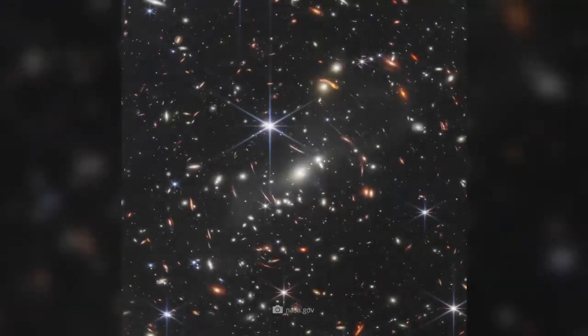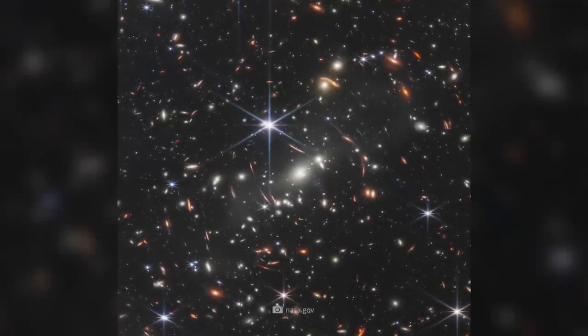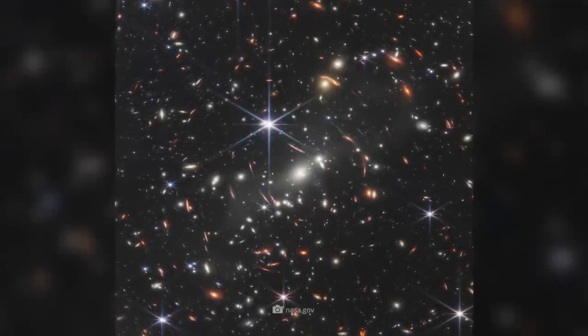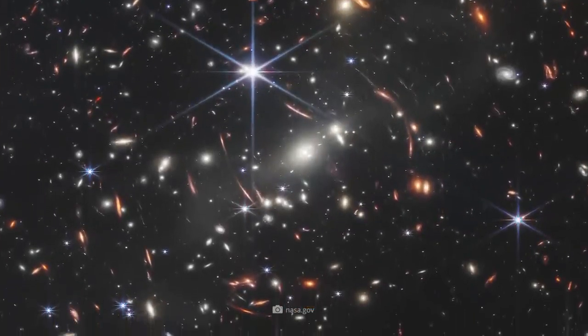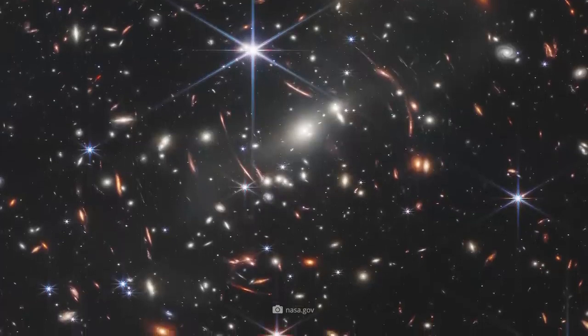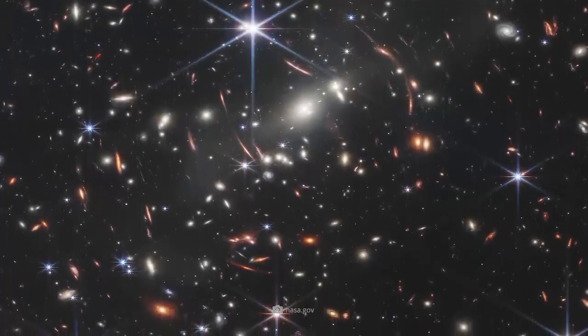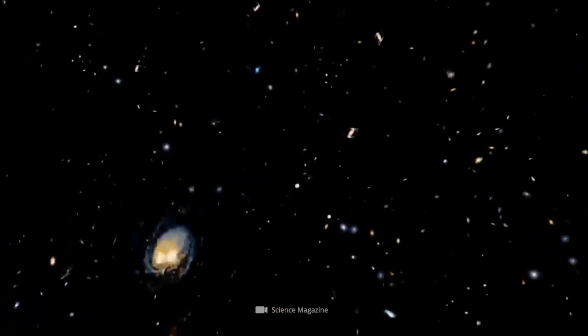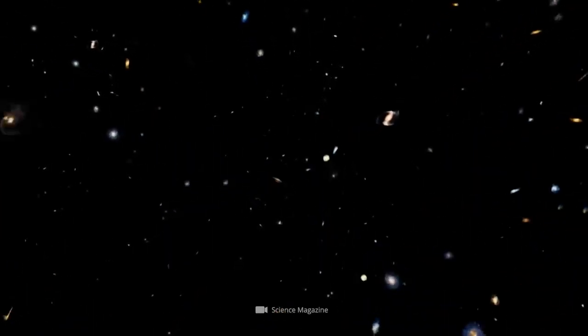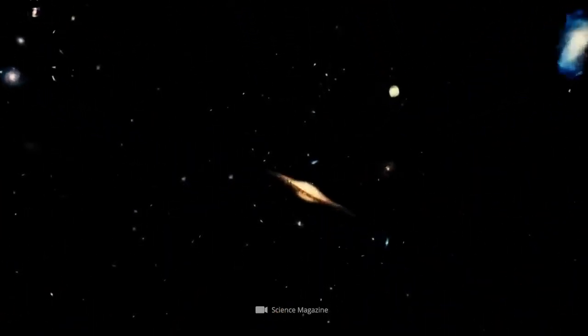The deep field image shows us therefore not only celestial bodies, but represents also a view into the past. The oldest objects or light rays on this image are red, the somewhat younger and closer ones are orange, then come yellow spots and finally blue or white ones. Naidoo's algorithm looked for the red spots and there especially for the oldest light rays.